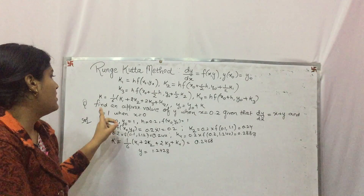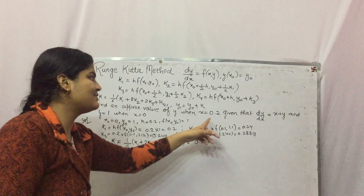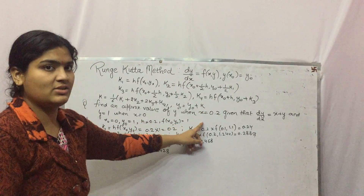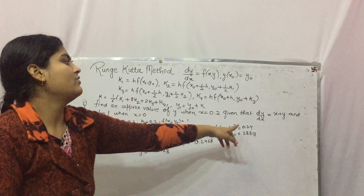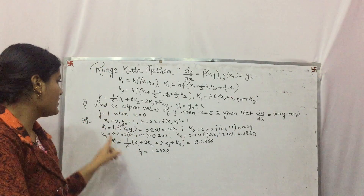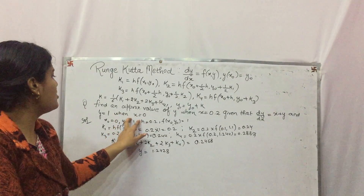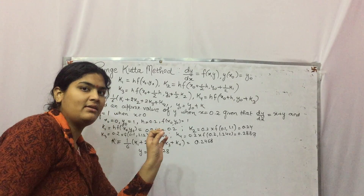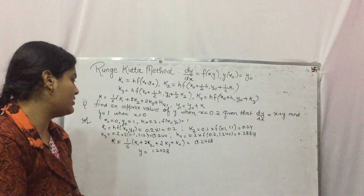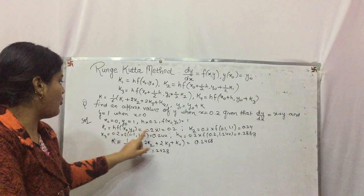Using this method, find out the approximate value of Y if x = 0.2. Here H = 0.2. The values of x₀, y₀, and H are given. The value of F is basically the value of y, so Y is 1. So x₀ = 0, y₀ = 1. Now K1 = H · F(x₀, y₀) = 0.2 × 1, so K1 = 0.2.